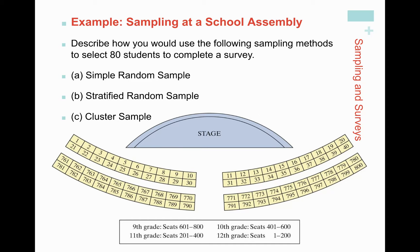For the SRS with n equals 80, I simply number all the chairs with the same number of digits. Using Table B, I renumber them not as 1, but as 001, 002, 003, all the way to 800 — all three digits. Then I write out that I'm going to Table B, starting at line 106, reading the table from left to right, and selecting 80 students between numbers 001 and 800. And skip repeats.